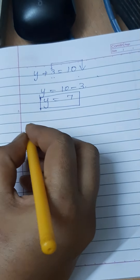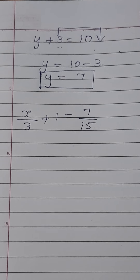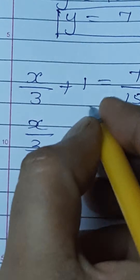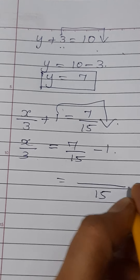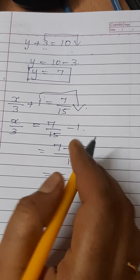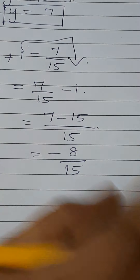Next, a somewhat difficult problem: x by 3 plus 1 equal to 7 by 15. The problem is given in fractions. We keep x by 3 on the left hand side and bring 1 to the right: x by 3 equal to 7 by 15 minus 1. Taking LCM as 15, that gives 7 minus 15 over 15, which equals minus 8 by 15, because the bigger number carries the minus sign.